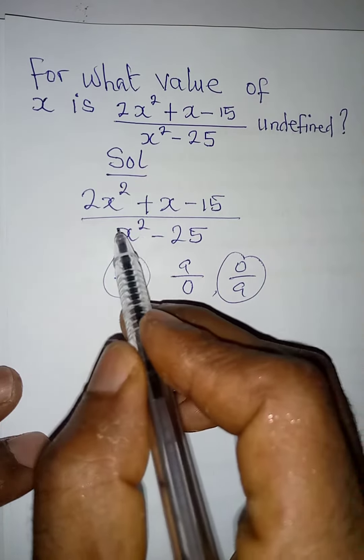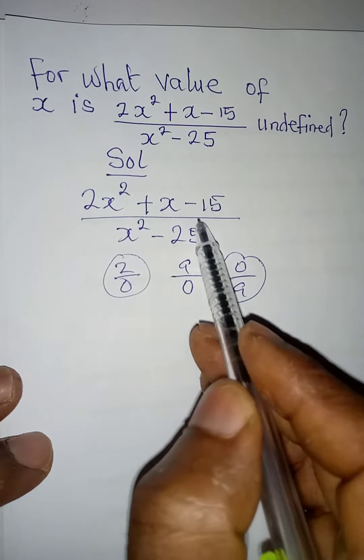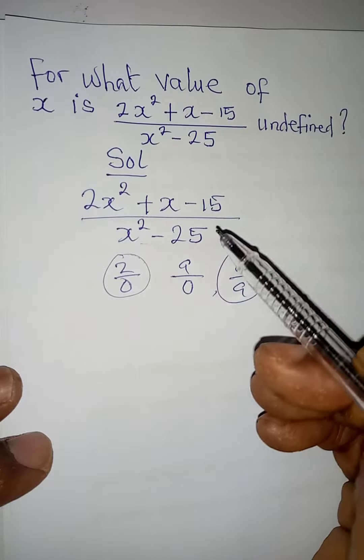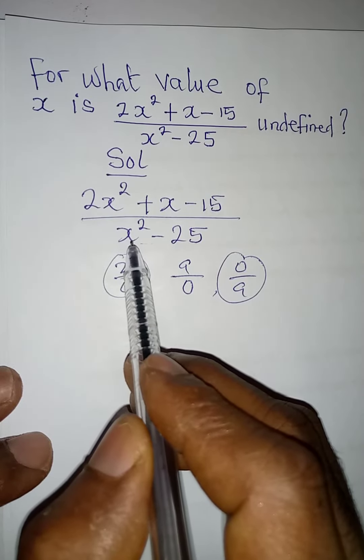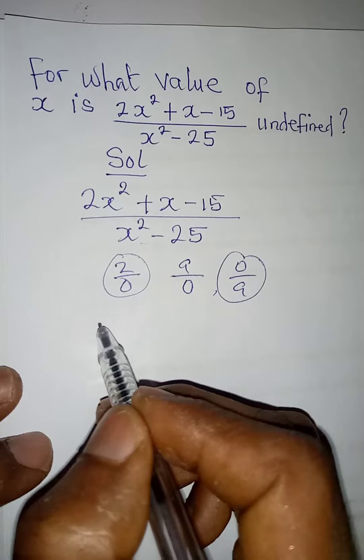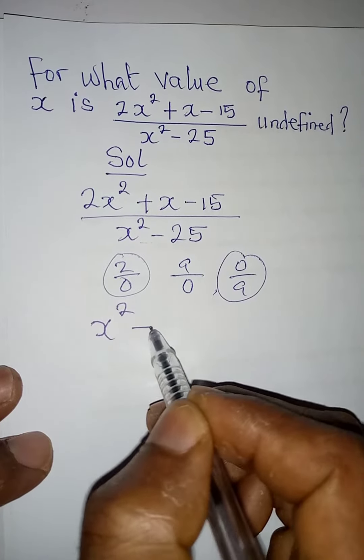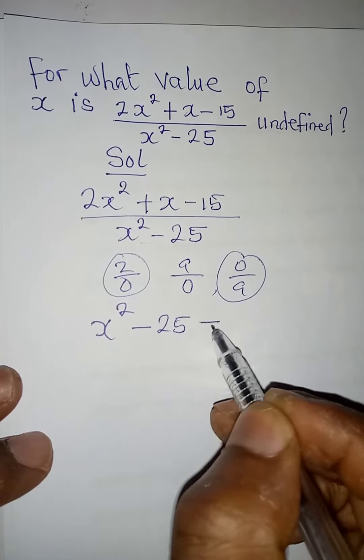So what do we do to get the value of x for which this expression is undefined? We will equate the denominator to 0. So we are just going to say that x squared minus 25 is equal to 0.